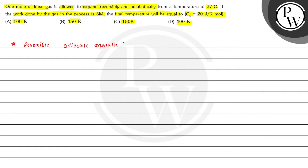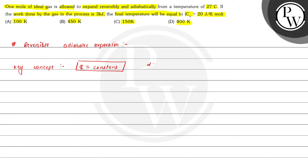Now we can write our key concept. We can see that this is an adiabatic process, that means heat is constant, that means Q is equals to constant. So if Q is equals to constant, then DQ is equals to 0, that means change in heat is equals to 0.